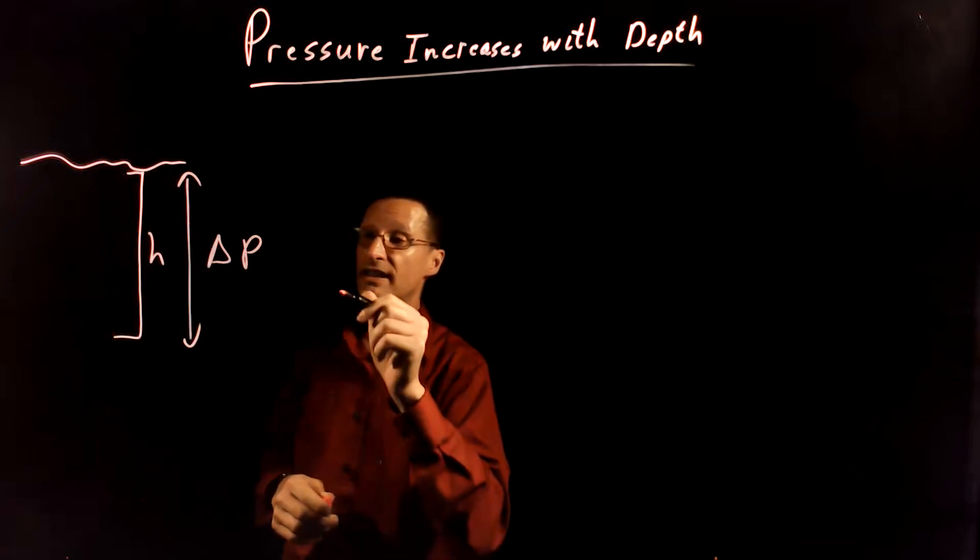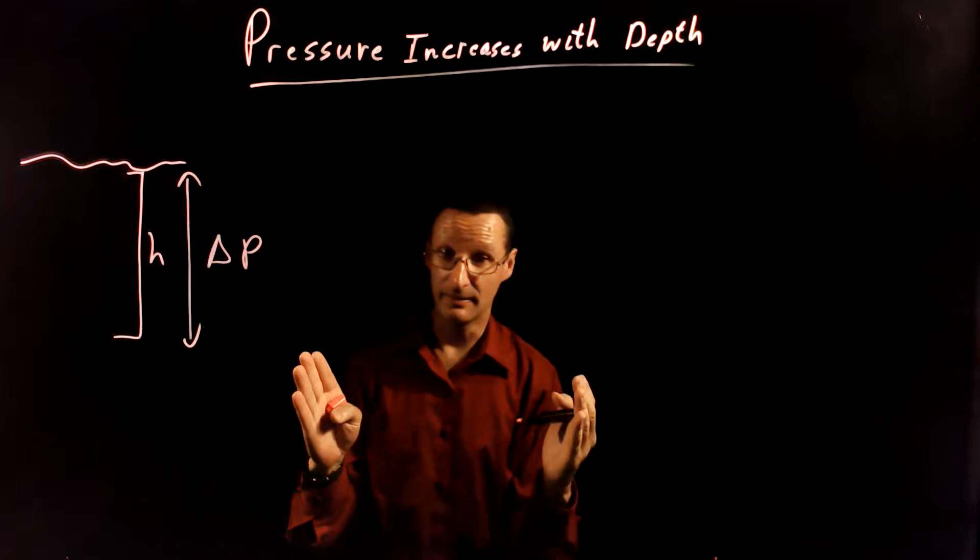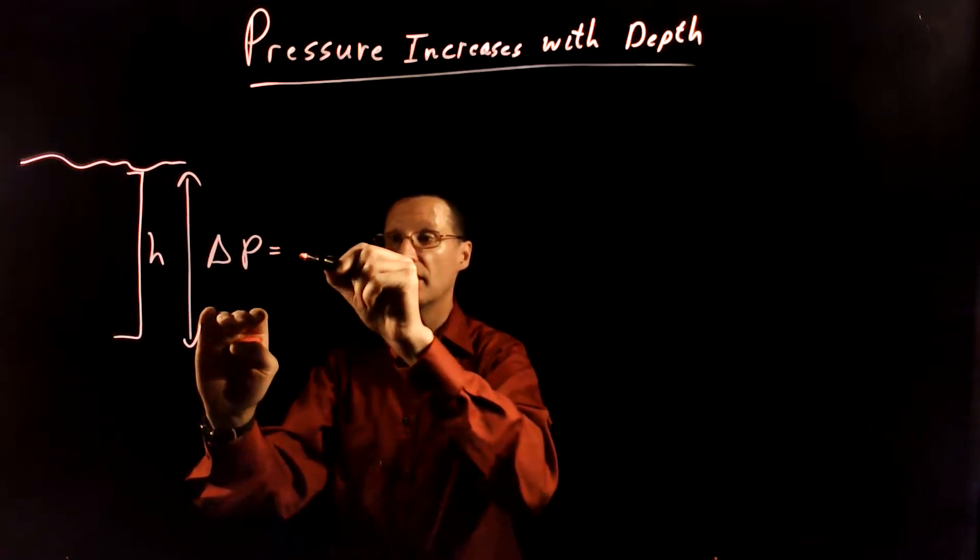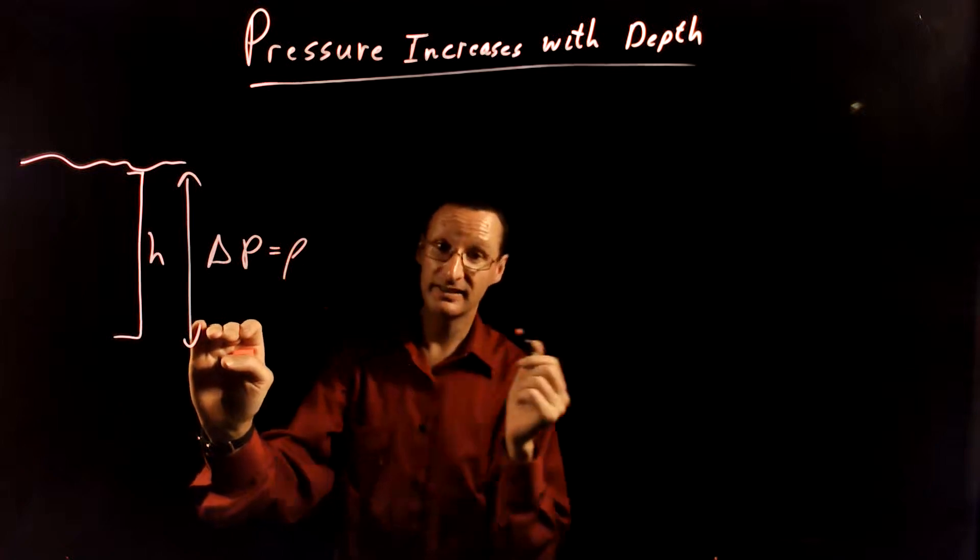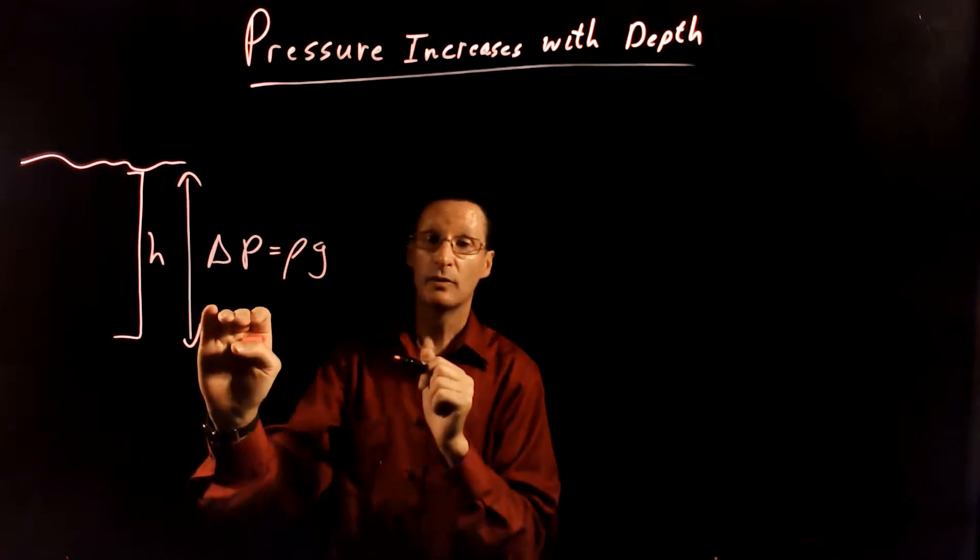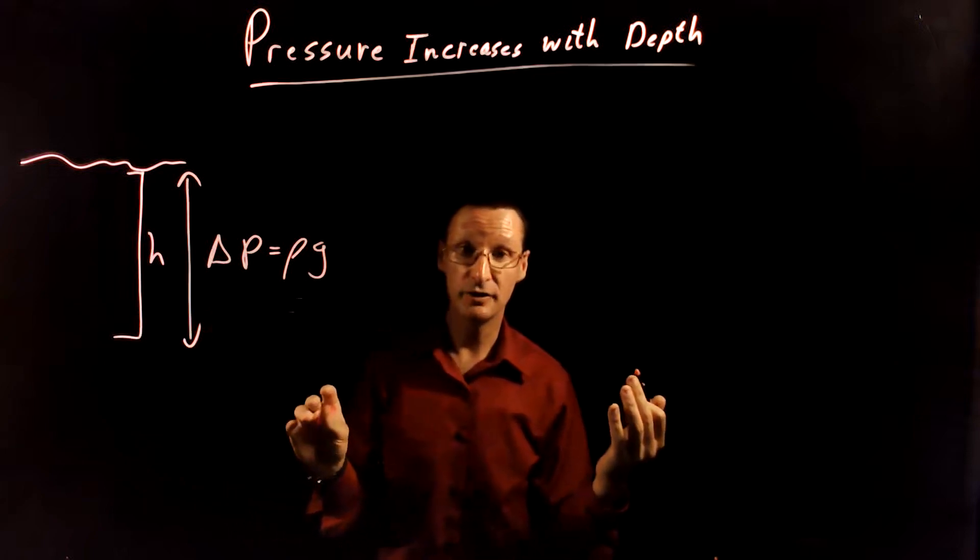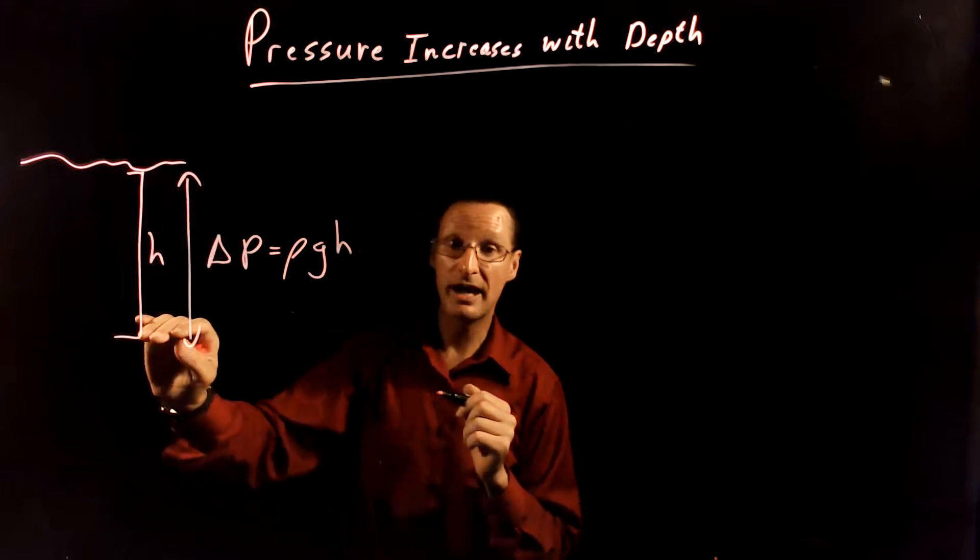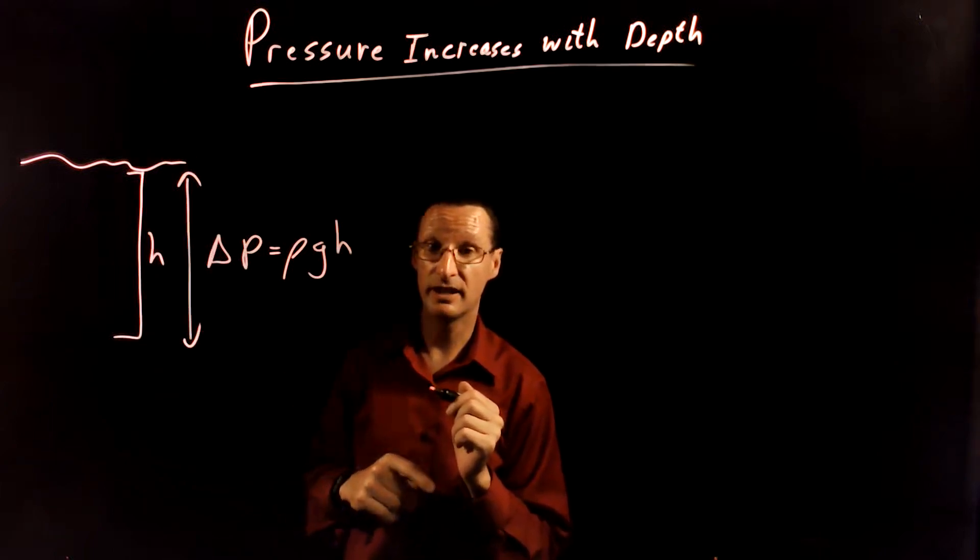Well the increase in pressure, the key idea here, the increase in pressure with depth is equal to the density of the fluid, in this case the density of water, times g which is the gravitational constant 9.8 newtons per kilogram, times the depth by which you've increased your position in the fluid.